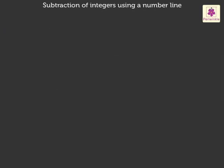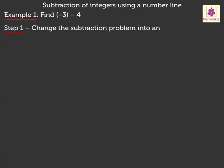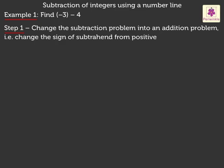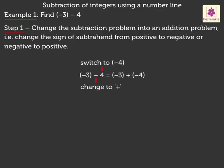Coming to subtraction of integers using a number line — let us solve a few examples to understand in a better way. Example 1: Find negative 3 minus 4. Step 1: Change the subtraction problem into an addition problem. That is, change the sign of subtraction from positive to negative or negative to positive. So, here on changing, we get the addition problem as negative 3 plus negative 4.